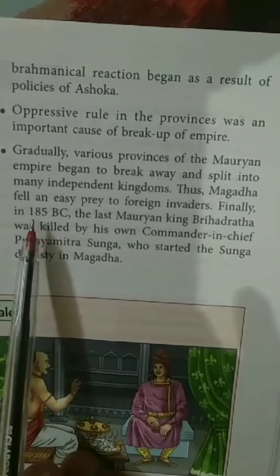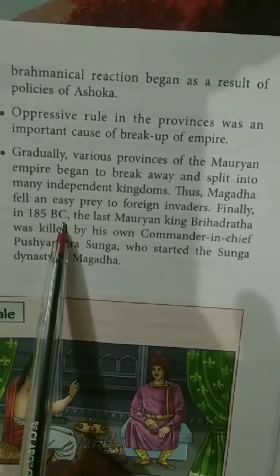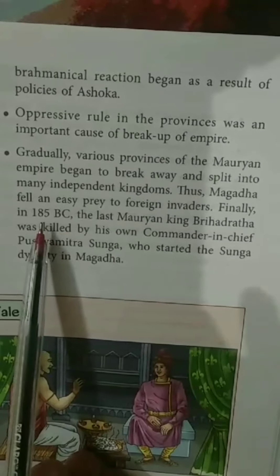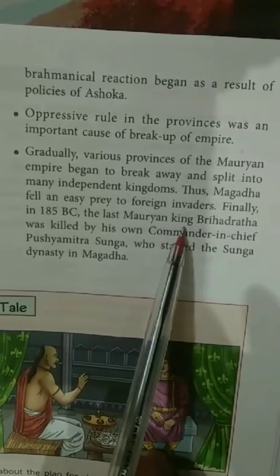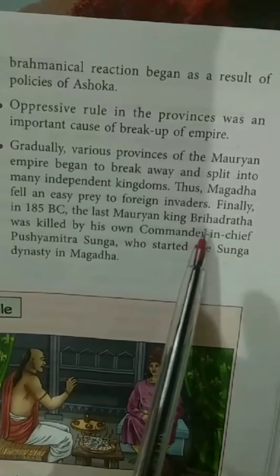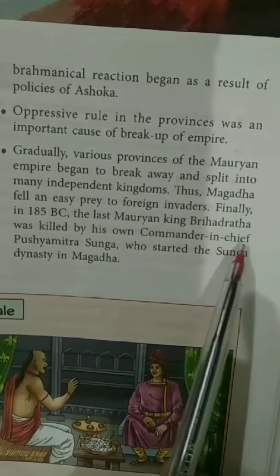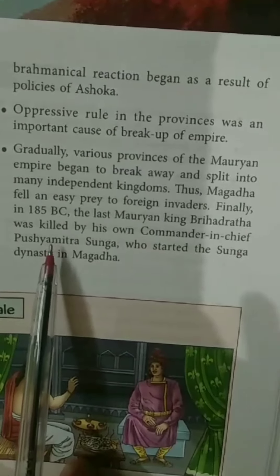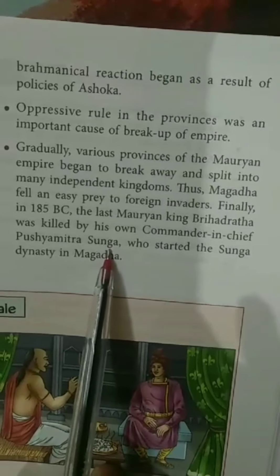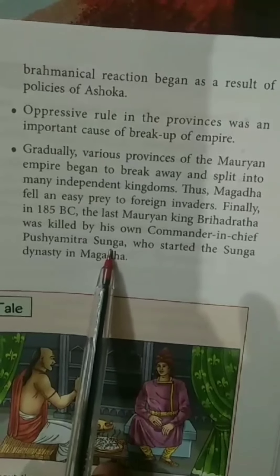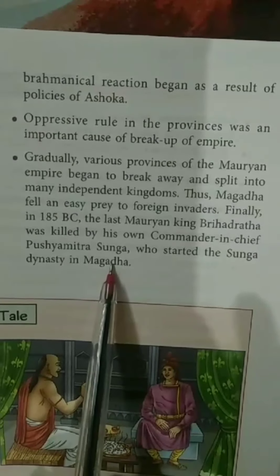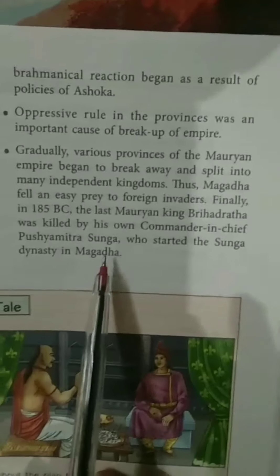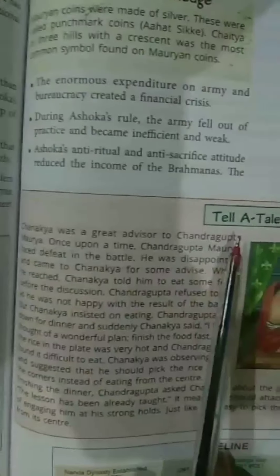In 185 BC, the last Mauryan king, whose name was Brihadrata, was killed by his own commander-in-chief, whose name was Pushpamitra Shunga. Pushpamitra became the ruler and started a new dynasty, known as the Shunga dynasty in Magadha.